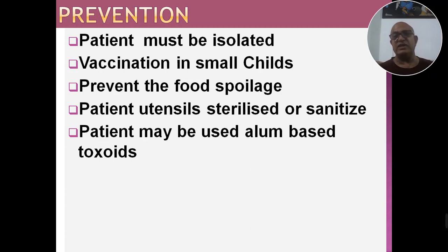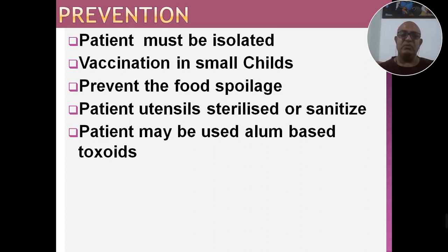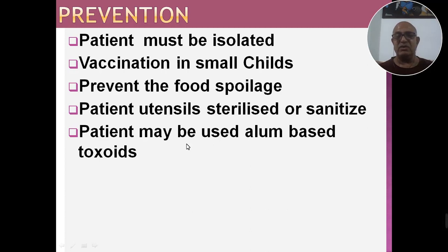Prevention: Patient must be isolated — diphtheria होने पर व्यक्ति को अलग कमरे में isolate करना चाहिए। भोजन सड़े-गले न हो, इस बात का विशेष ध्यान रखना चाहिए। Patient's utensils must be sterilized and sanitized — रोगी के बर्तनों को sterilize या sanitize करना चाहिए। Alum-based toxoids can be used।